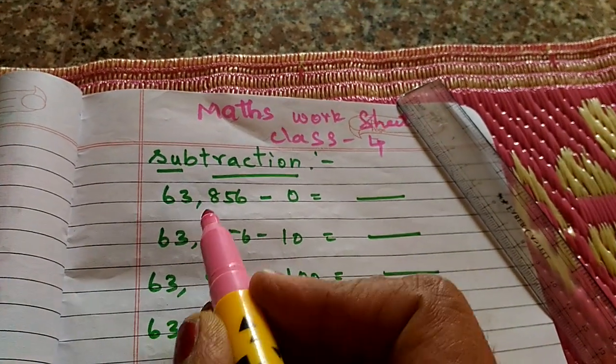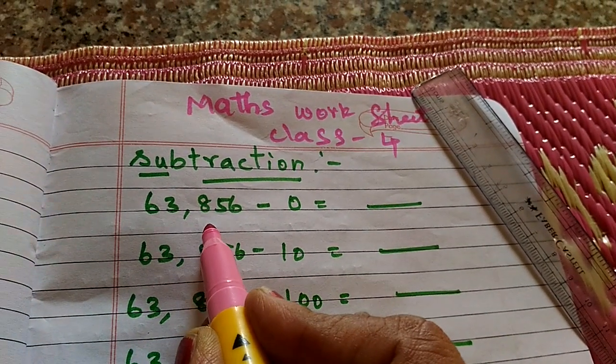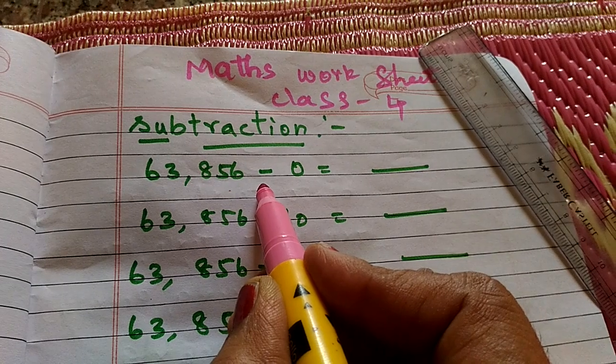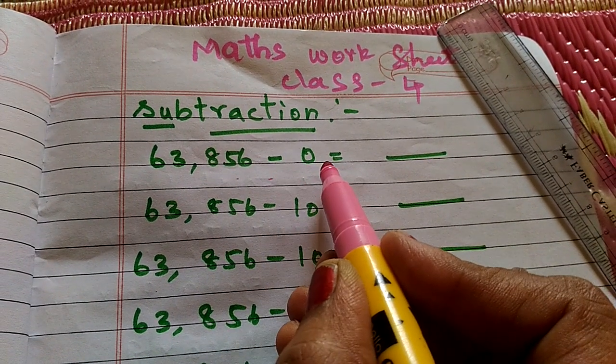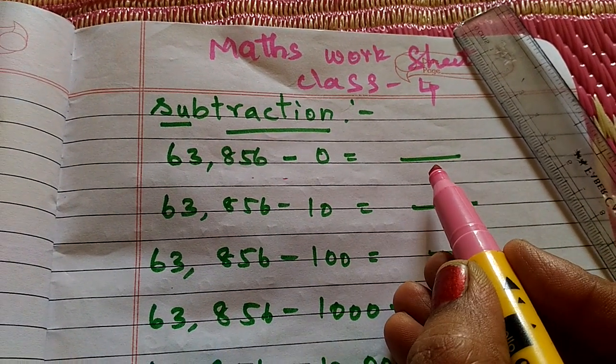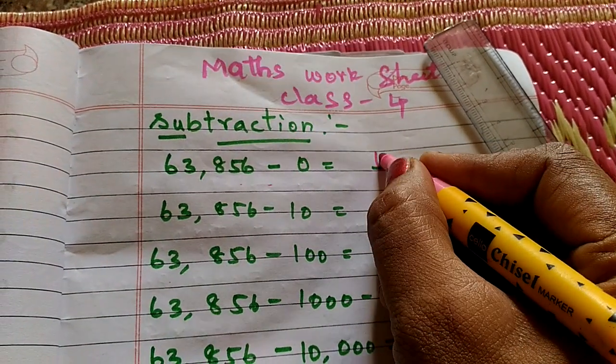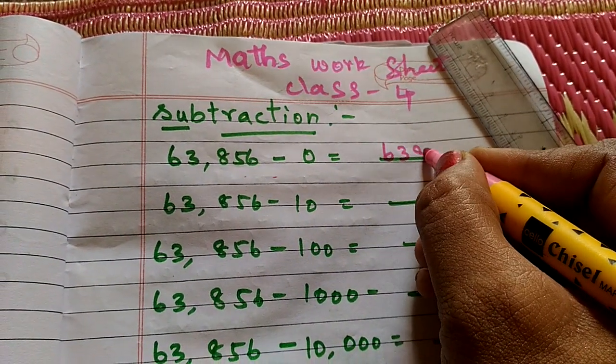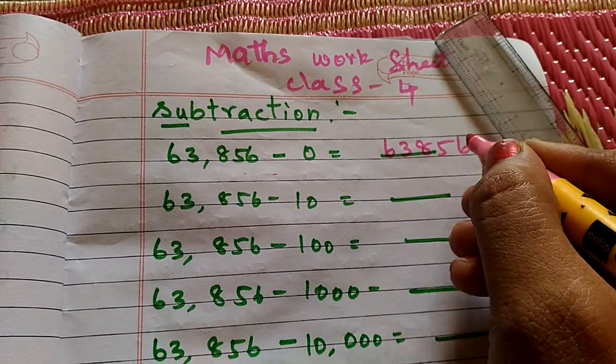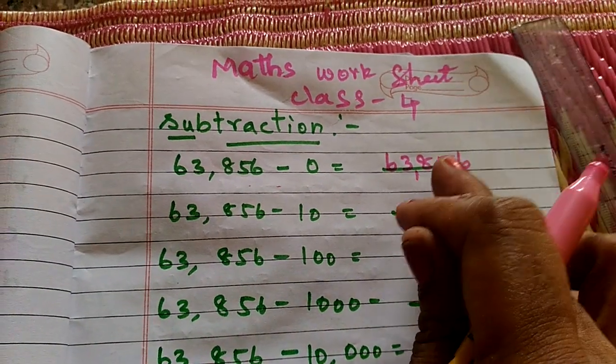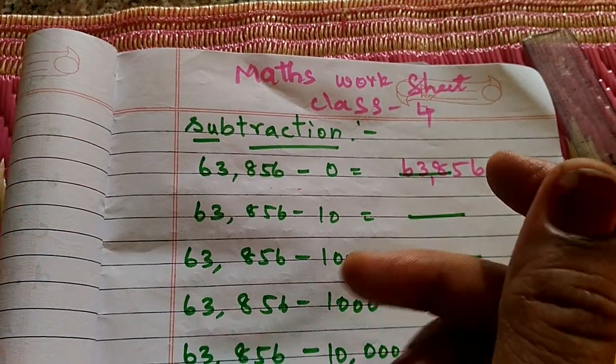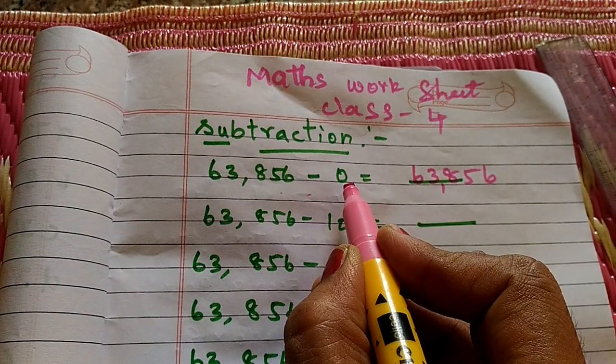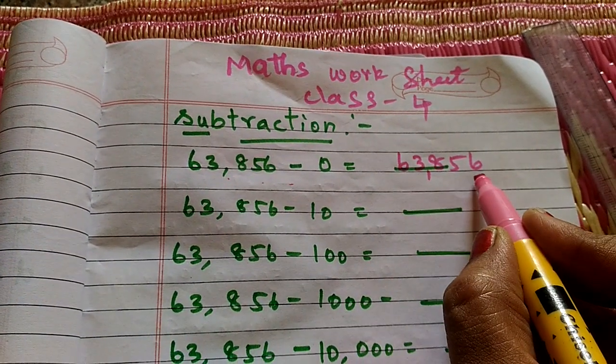Subtraction: 63,856 minus 0 equals 63,856. Answer is 63,856. If you subtract any number by 0, you get the same number.